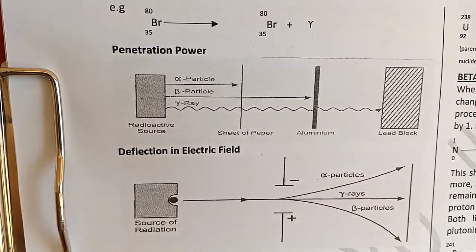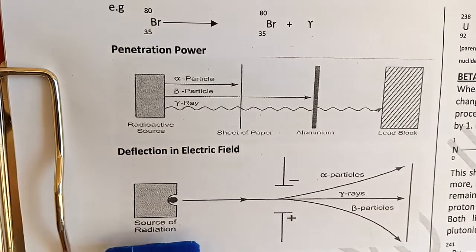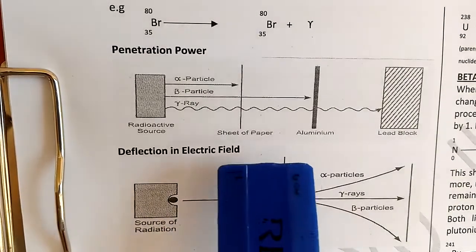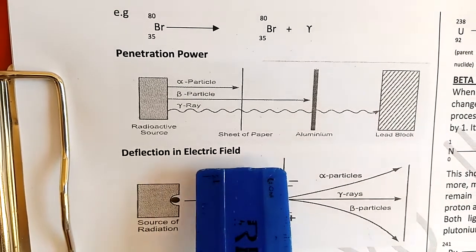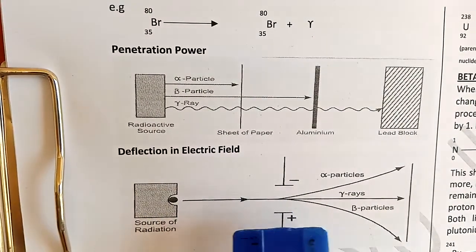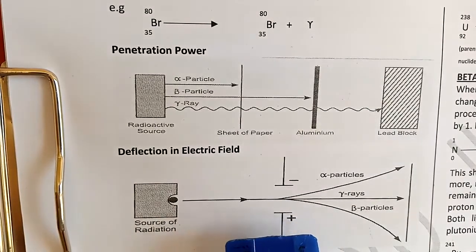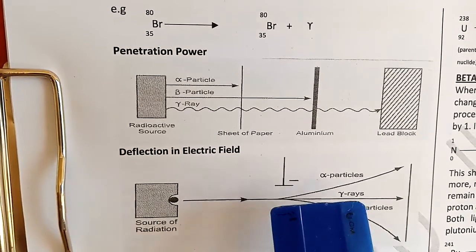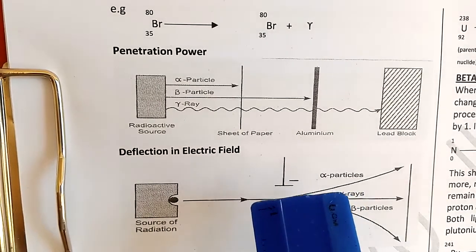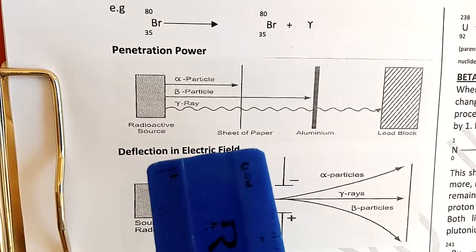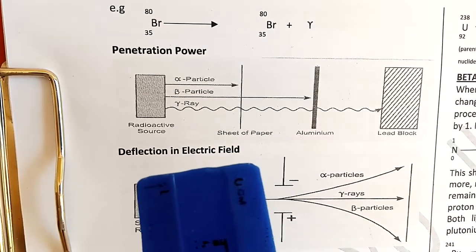Regarding deflection in an electric field: as the radiation passes through, the upper part has the negative plate and the lower part has the positive plate. Alpha particles are positively charged, so they are attracted toward the negative plate of the electric field.